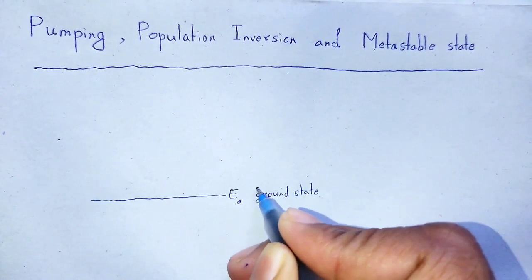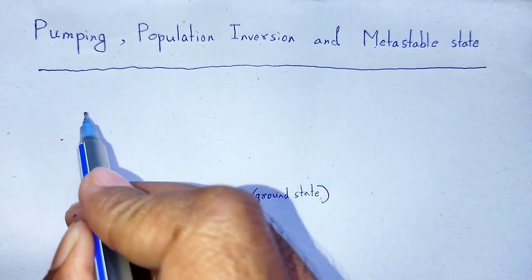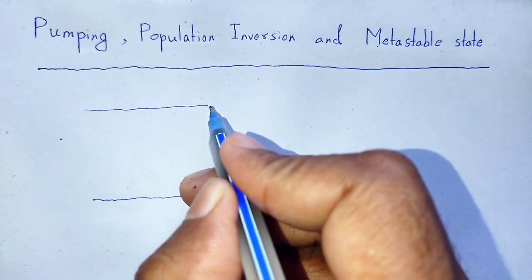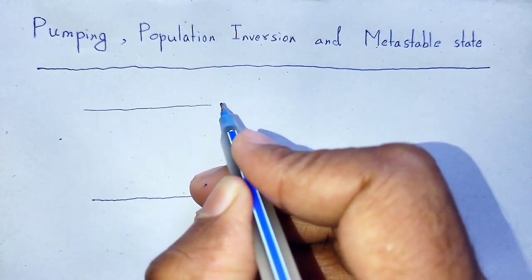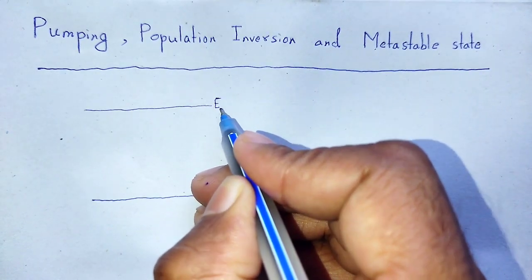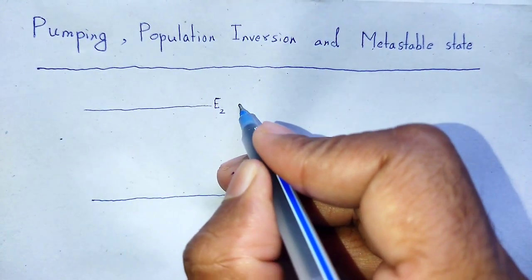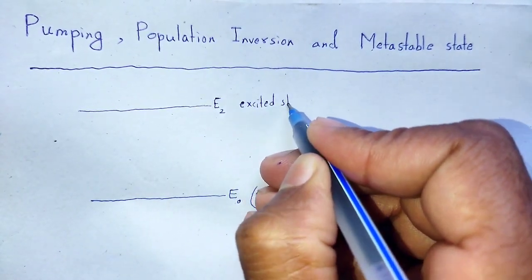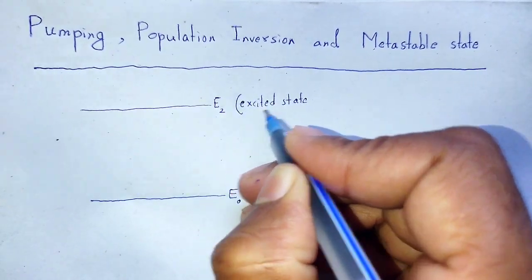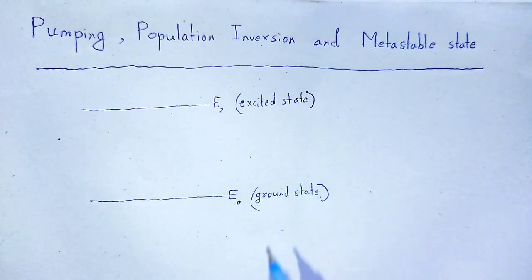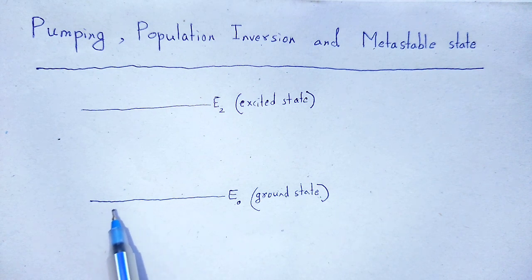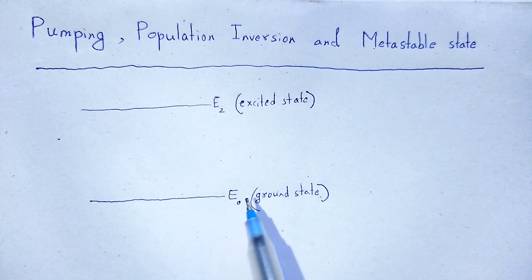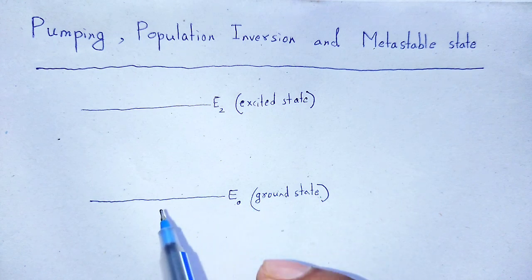E0 is the lowest energy level. At E2, the excited state, that is the highest energy level. In the ground state, there will be either electrons, atoms, or molecules present.